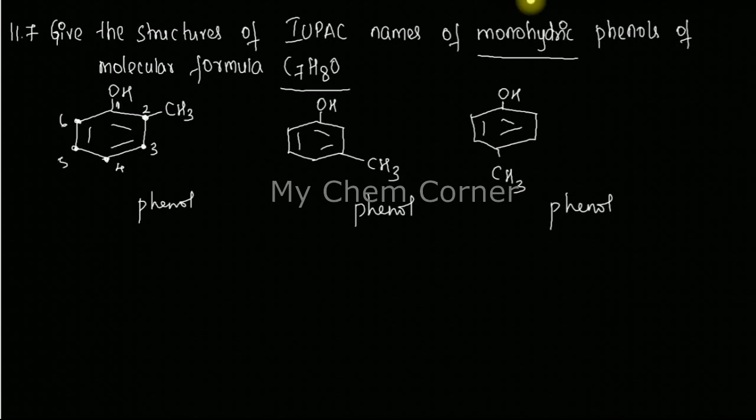I counted in the clockwise direction and the methyl group got position number two, whereas if I count anti-clockwise, the methyl group would get position number six. So I'll go clockwise. Here, the methyl group is present at position number two, so I'm going to name this 2-methyl phenol.